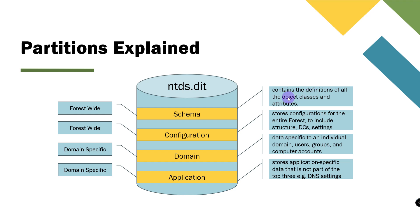The schema partition contains all the definitions for the objects or classes of objects in the domain, and it is delivered forest-wide — something you should know when working with Active Directory. The configuration partition is also forest-wide and stores configurations for the entire forest structure, including other domain controllers on the network and their settings.